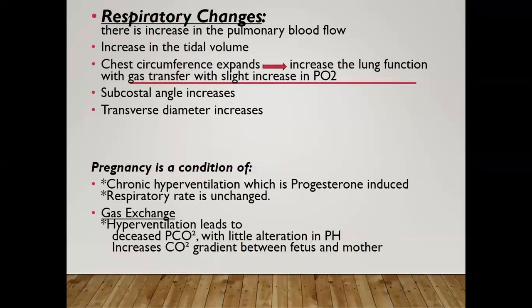In the respiratory system, there is an increase in the pulmonary blood flow with a decrease in the pulmonary vascular resistance. There is an increase in the tidal volume to cope with the increased requirement for oxygen. The chest circumference expands and looks like a barrel chest, increasing lung function with gas transfer and a slight increase in the partial pressure of oxygen.